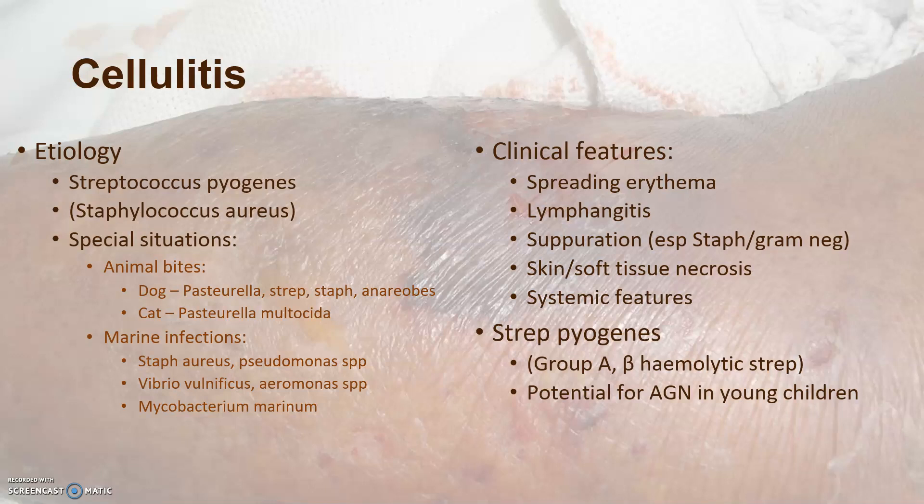This is cellulitis, usually caused by Strep pyogenes or group A beta-hemolytic streptococci, often also associated with Staphylococcus aureus — these organisms can live in synergy. There are special situations such as animal bites and marine infections where different organisms may be encountered, particularly Pasteurella multocida, other anaerobes, and with marine infections some more specific organisms. In certain hosts with poor vascular supply or who are immunocompromised, particularly diabetics, other organisms may be involved such as gram-negatives like Pseudomonas and anaerobes.